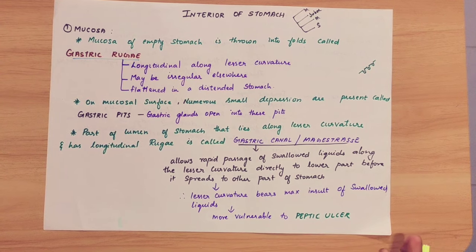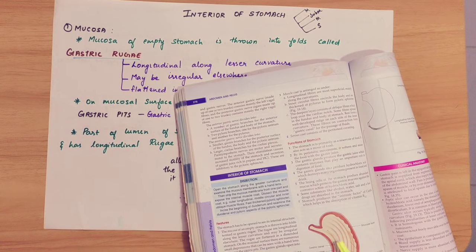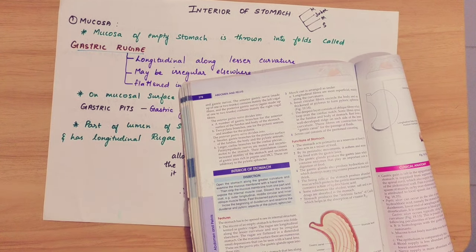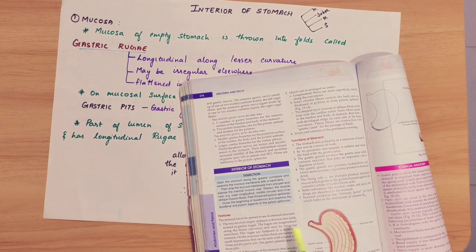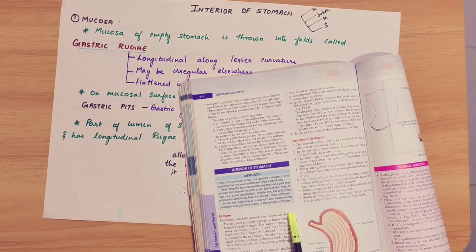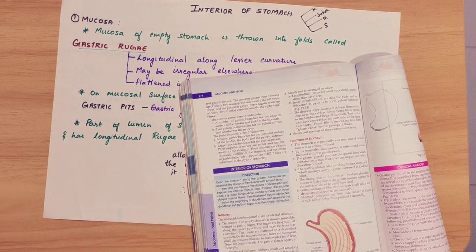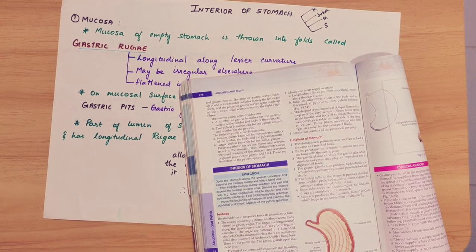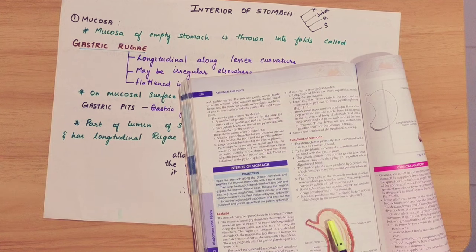Along the lesser curvature and greater curvature, in the lesser curvature, we have a gastric canal. This gastric canal has longitudinal folds. This is how fluids or liquids that you are drinking or eating travel along the lesser curvature to the pyloric sphincter and pyloric area and go to the duodenum.